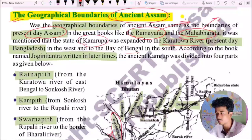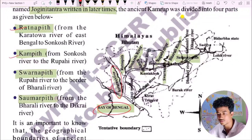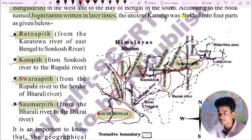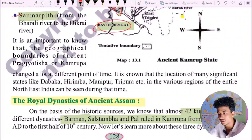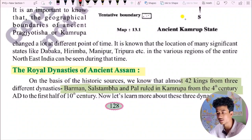The ancient country was divided into four parts. The typical boundaries of ancient Pragjyotisha or Kamarupa changed a lot at different points of time. We have to note that the location of many significant states like Dawaka, Hirimba, Manipur, Tripura, etc., in the various regions of the entire Northeast India can be seen during that time.